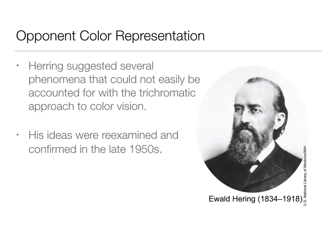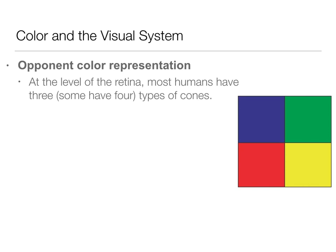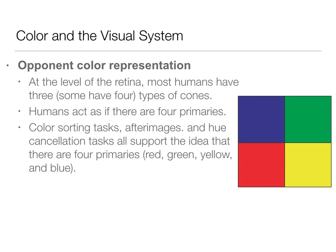At the level of the retina, most humans have three — some have four — types of cones. This allows us to act as if there are four primary colors. Red, green, blue is what we see with light, and blue, red, yellow is what we see with mixing color substances. We see evidence for this through things like color sorting tasks, afterimages, and hue cancellations, and we'll go through some of these.